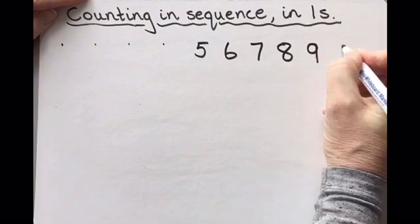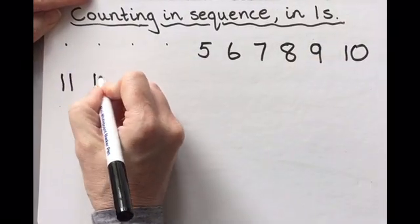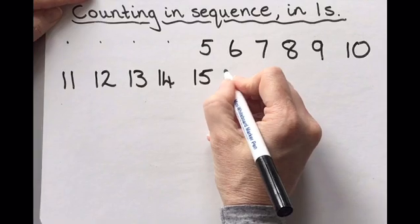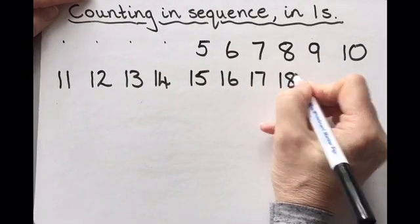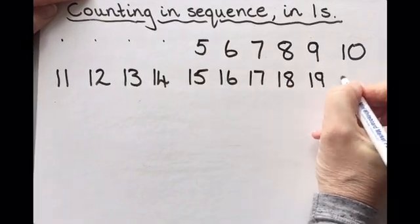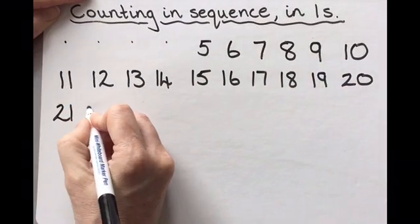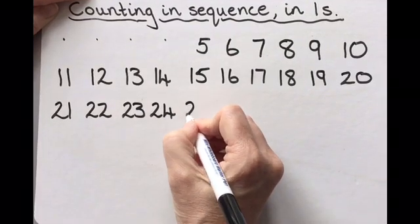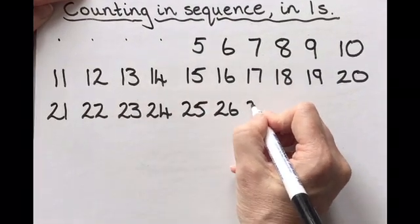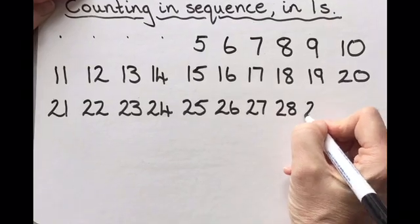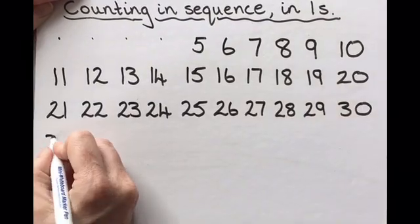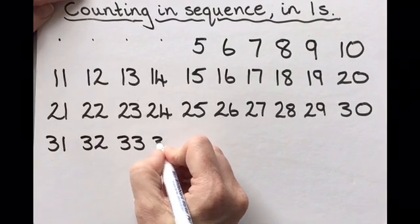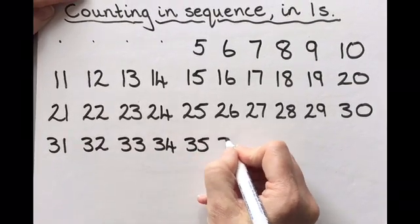Here is an example of a choral count done with a Primary 1 class. One of the aims of this count was to provide an opportunity for learners to count from a different starting number rather than from 1. This example began at 5 and finished on 42. The count had to be big enough to allow learners to see the patterns in the count.